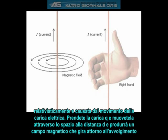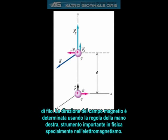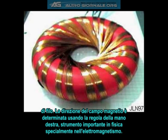Magnetism is just a relativistically induced force caused by the movement of electric charge. Take a charge Q and move it through space a distance D, and it will produce a magnetic field which curls around the loop of the wire in a corkscrew.